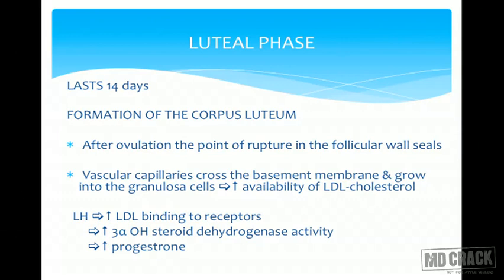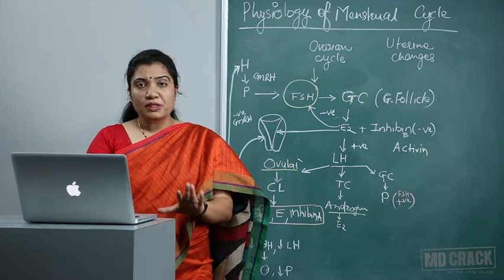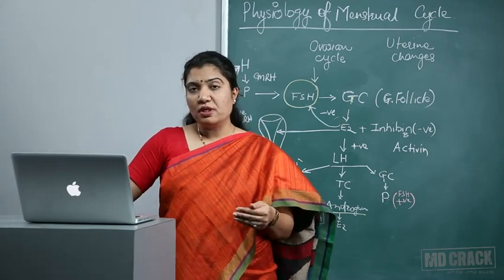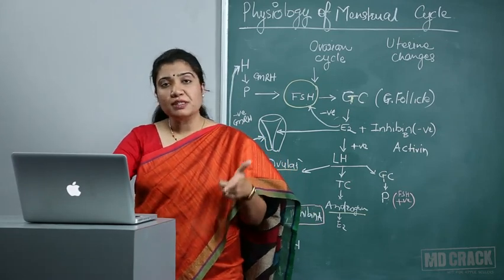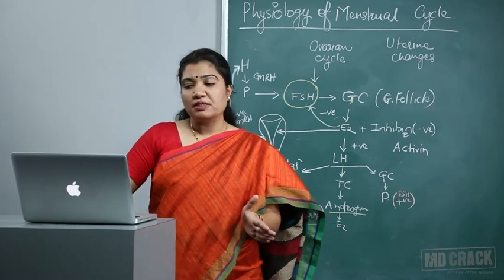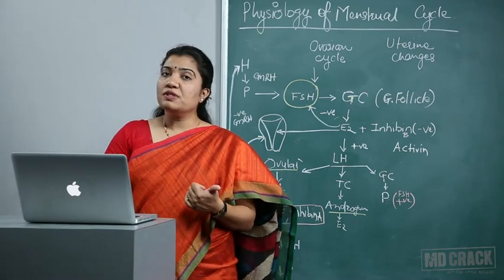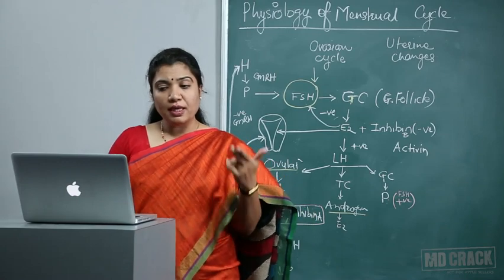After ovulation, the 14-day luteal phase begins. After ovulation, the point of rupture in the follicle wall seals, vascular capillaries cross the basement membrane into the granulosa cells, increasing LDL cholesterol availability. LH leads to increased LDL receptor binding, increased 3α-hydroxysteroid dehydrogenase activity, and increased progesterone. The corpus luteum, once formed, secretes four hormones: progesterone, estrogen, inhibin, and in case of pregnancy, relaxin — an important MCQ.